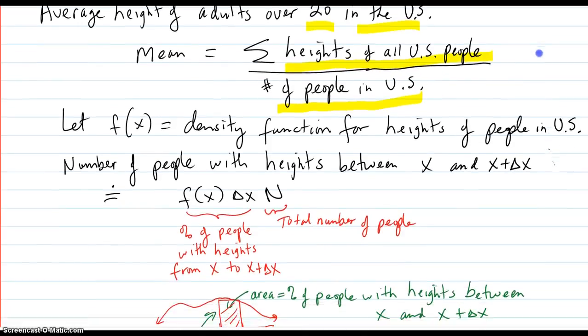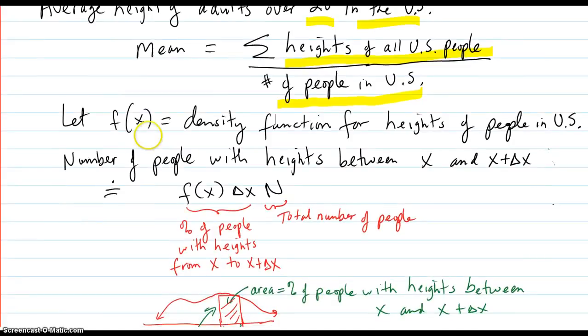So let's just do this in a more sophisticated way. Let's set f of x is the density function for the heights of the people.